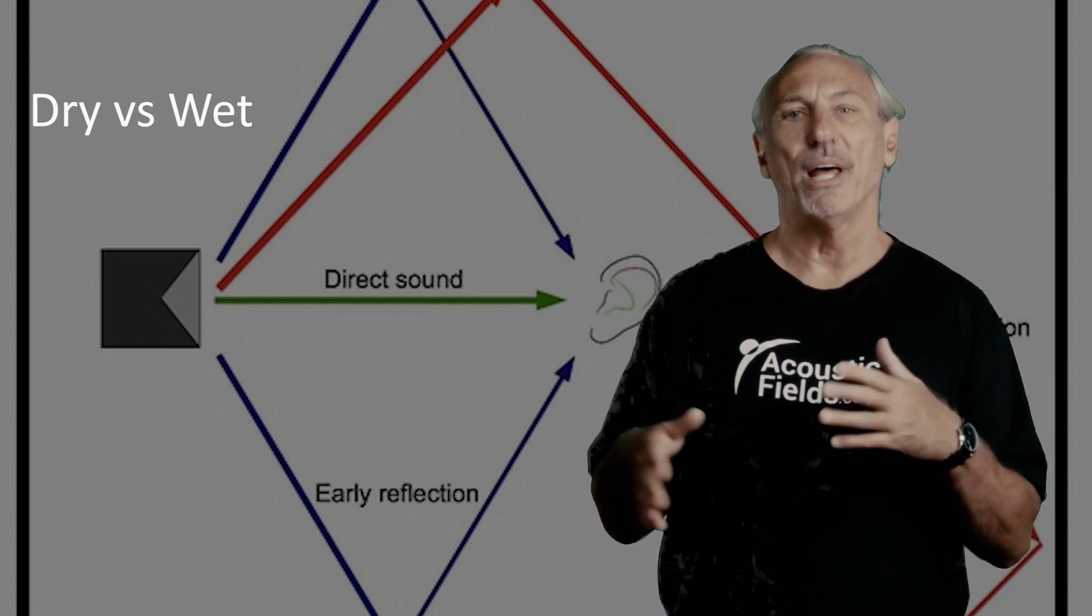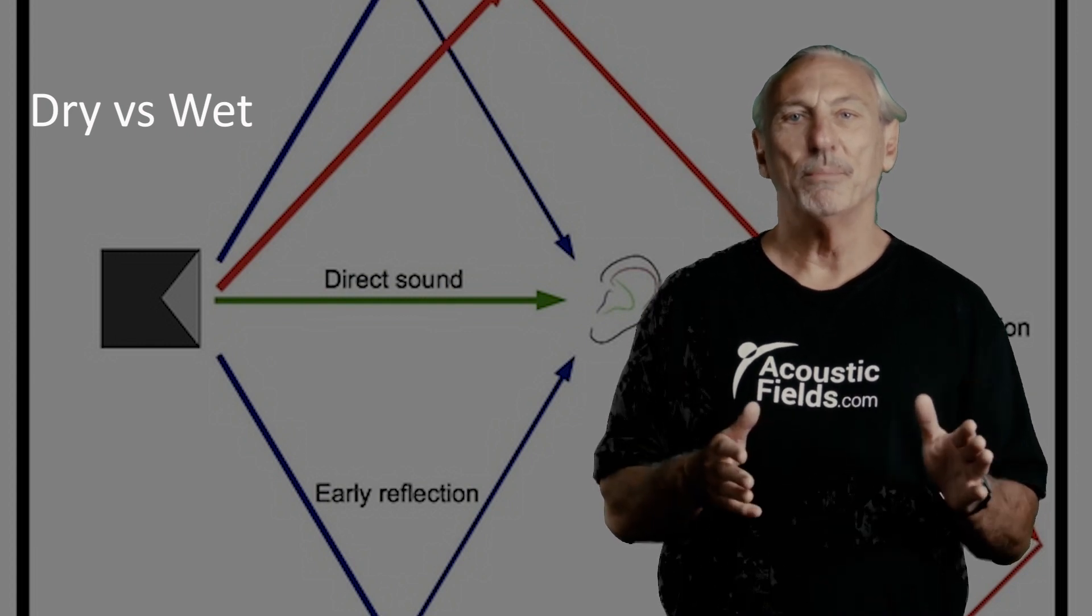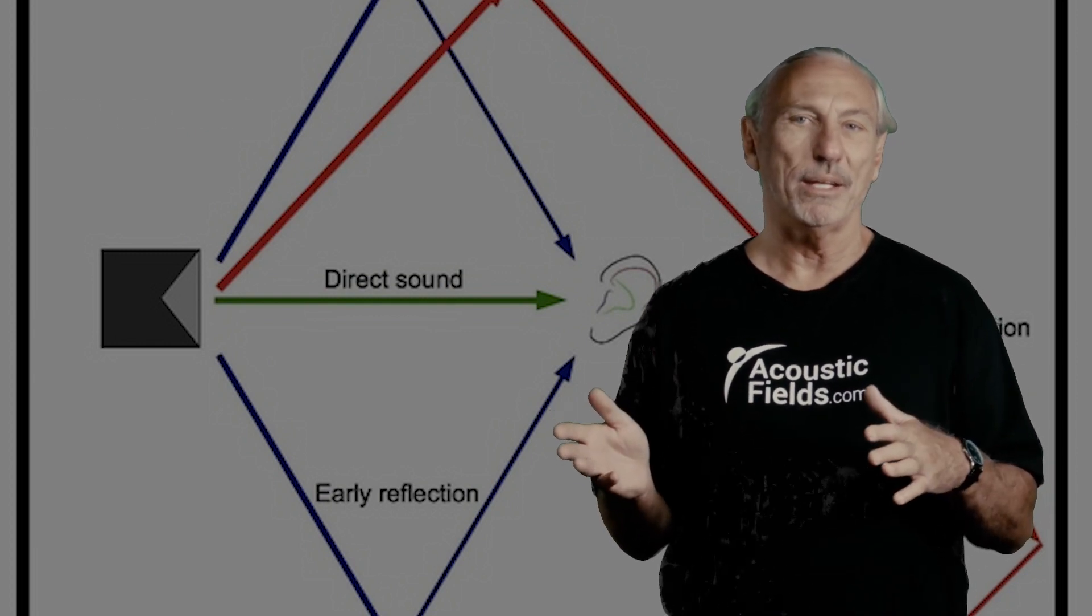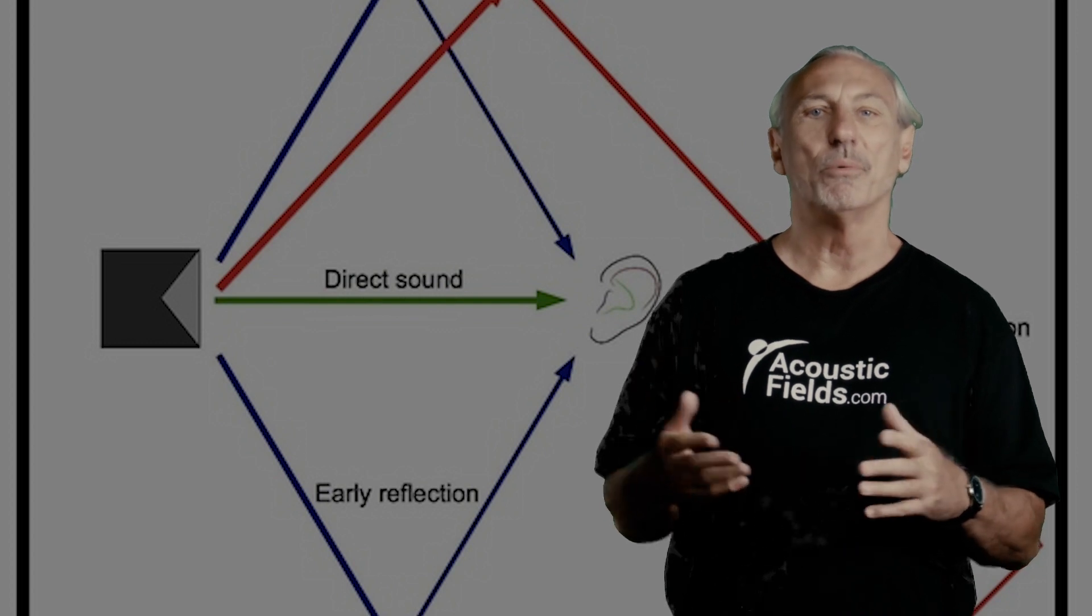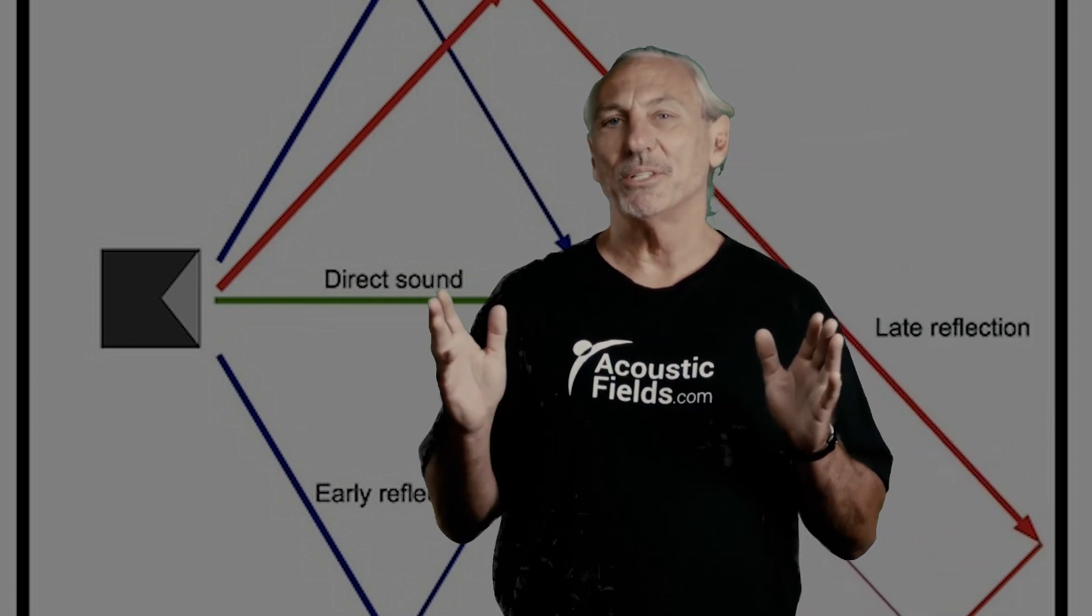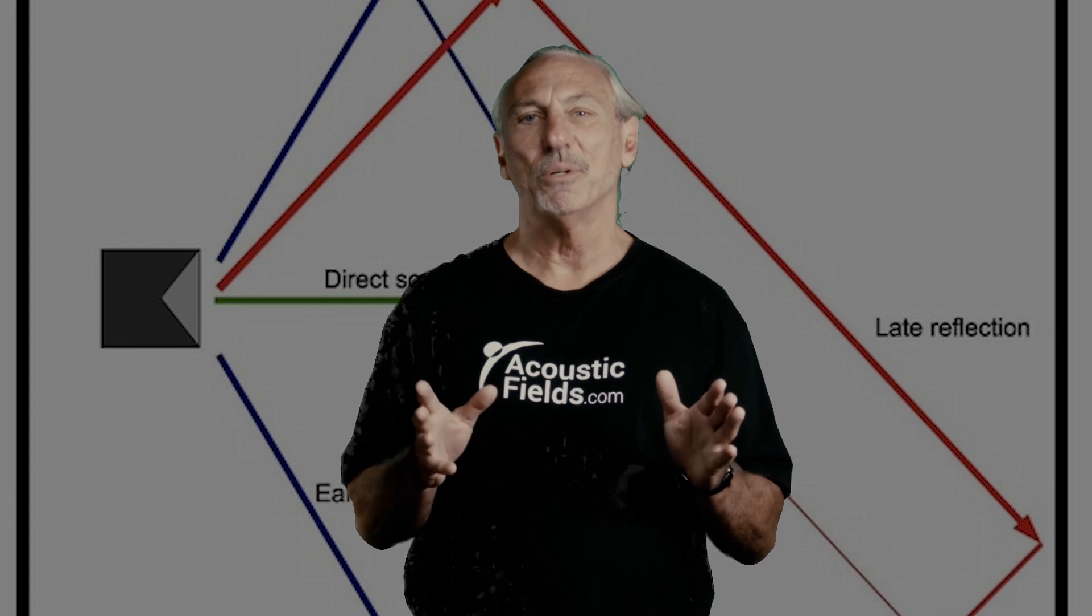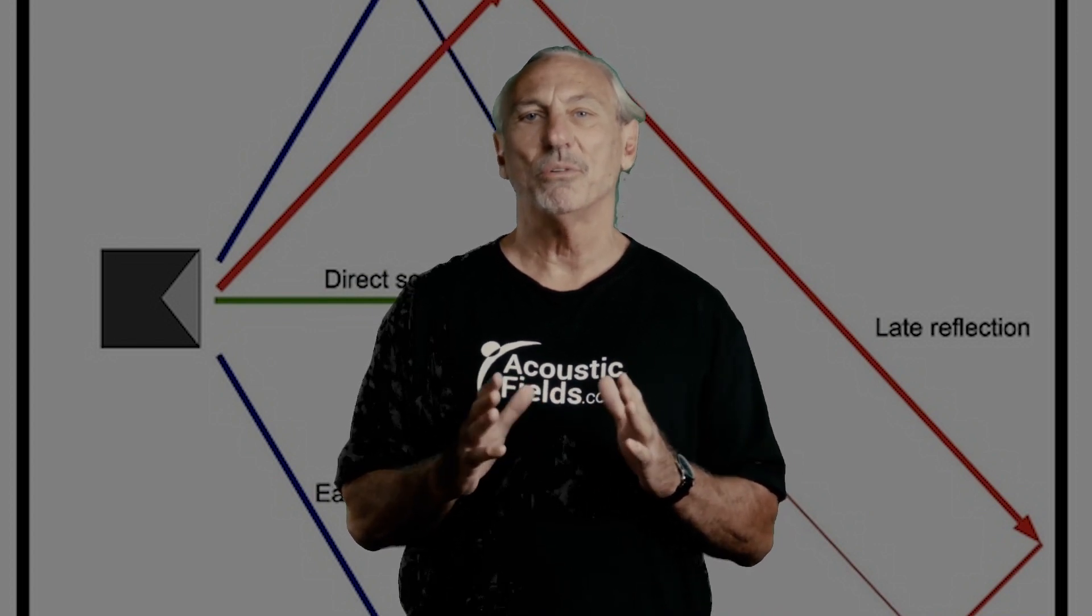This is where the term wet and dry came from. Dry is lots of absorption, minimum reverberation, and then wet or alive is more reverberation. So reverberation is that persistence of sound in our room, and we know that's distortion. So we want to assign the appropriate treatments to deal with that, and we'll talk about that in another video. I hope this helps. Thank you.